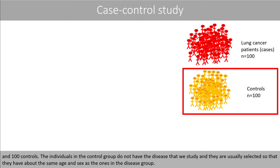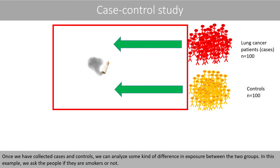The individuals in the control group do not have the disease that we study, and they are usually selected so they have about the same age and sex as the ones in the disease group. Once we have collected cases and controls, we can analyze some kind of difference in exposure between the two groups. In this example, we ask the people if they are smokers or not.